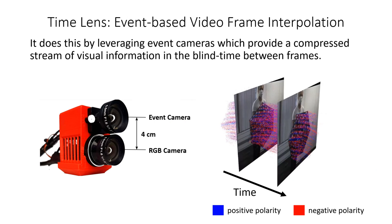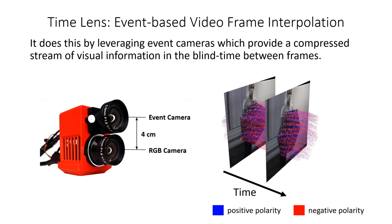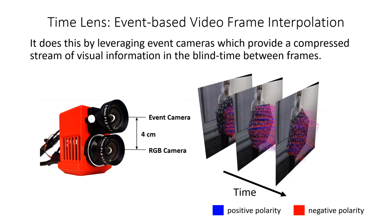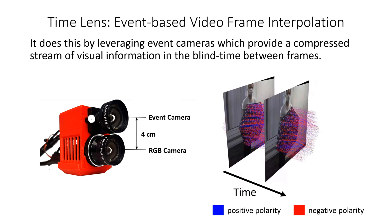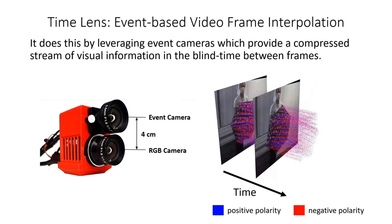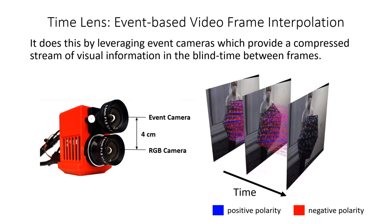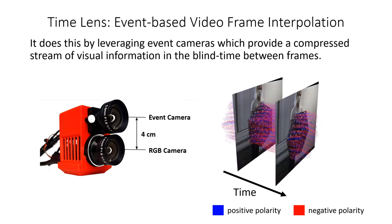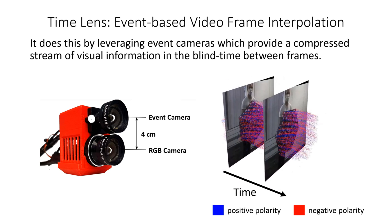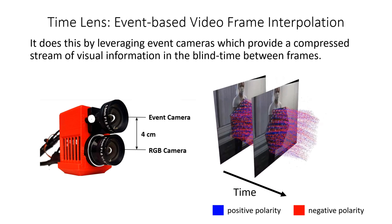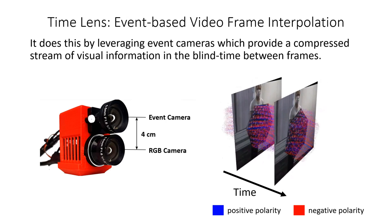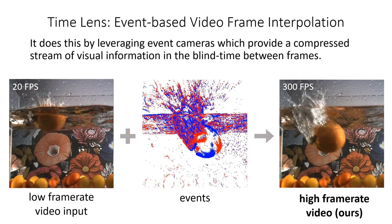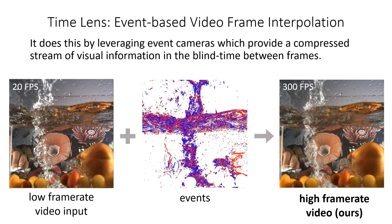Time Lens works by combining RGB frames from a low frame rate camera with asynchronous events from an event camera. These events only report per-pixel brightness changes asynchronously, thus providing a highly compressed representation of the visual signal in the blind time between frames.